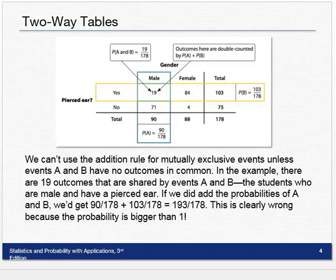We can't use the addition rule for mutually exclusive events unless events A and B have no outcomes in common. In this example, there are 19 outcomes that are shared by the two events that are male and pierced ears. If we add the probabilities, we would get 90 out of 178 plus 103 out of 178. If we add those up, we get 193 over 178. Well, that's greater than 1. Clearly wrong. So what's happened is we double counted these 19 people. We have a formula that helps us get around that.